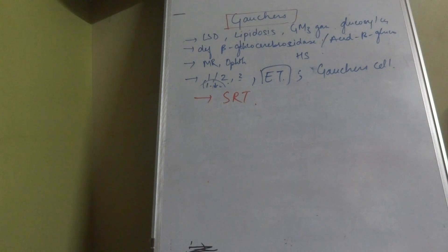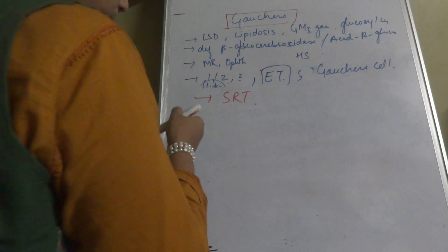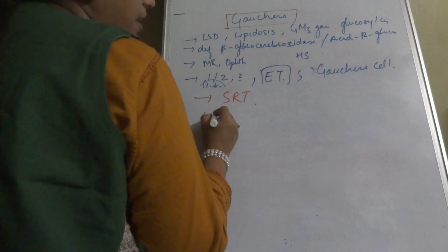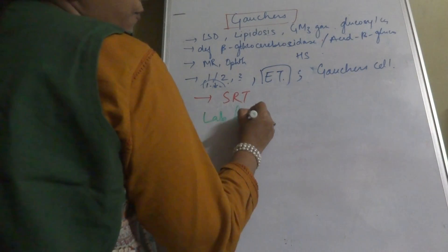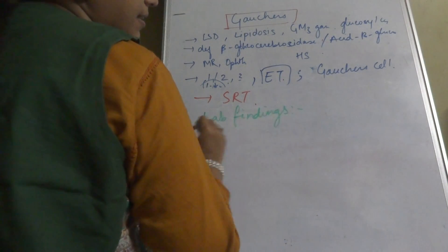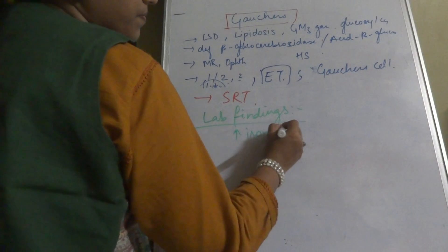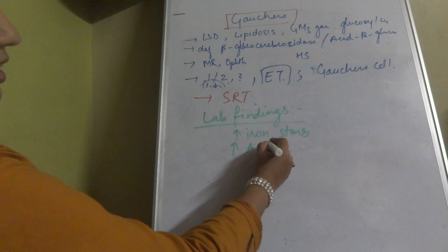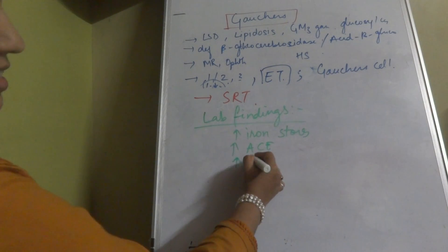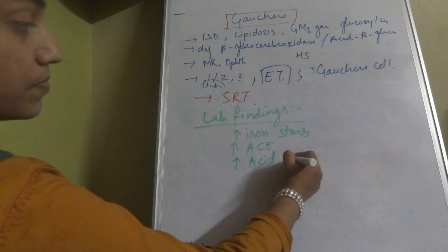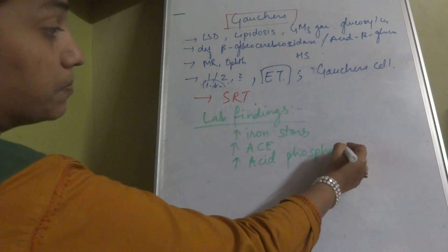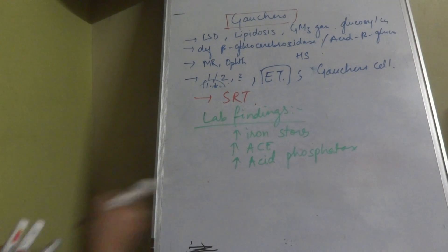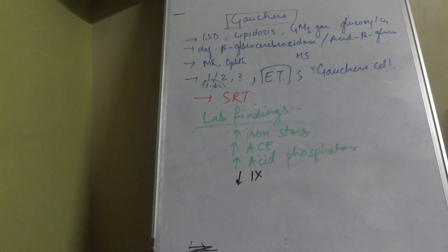Other laboratory findings in Gaucher's disease include increased iron stores, increased angiotensin-converting enzyme (ACE), increased acid phosphatase, and decreased clotting factor number 9. These are additional points beyond the primary enzyme deficiency finding.